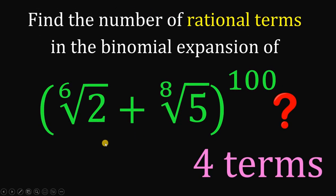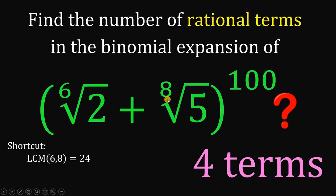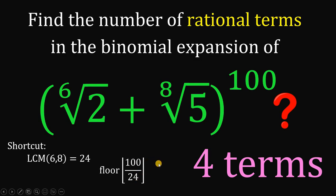Is there a shortcut for this kind of question? Of course there is. Since 2 and 5 are prime numbers, we can use a shortcut: first, get the LCM of 6 and 8, which equals 24. Next, divide 100 by 24 and take the floor value. Since 100 divided by 24 is approximately 4 point something, the floor value is simply 4. So the answer is just 4 rational terms. And as always, we are done.